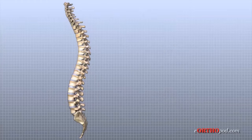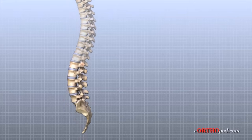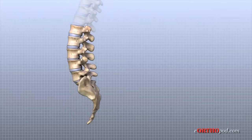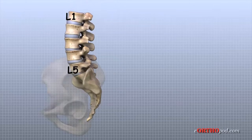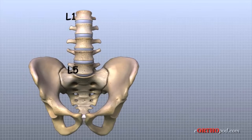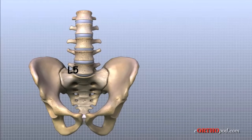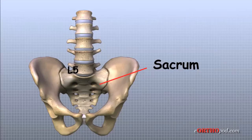The lumbar spine is made up of the lower five vertebra. Doctors often refer to these vertebra as L1 to L5. The lowest vertebra of the lumbar spine, L5, connects to the top of the sacrum, a triangular bone at the base of the spine that fits between the two pelvic bones.